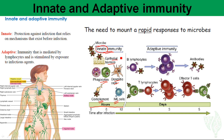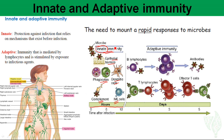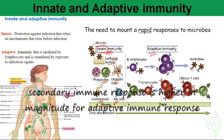The innate immune response is approximately the same magnitude during both the primary immune response — the first time the invader enters — and the secondary immune response — when the invader enters a second time. In contrast, the adaptive immune system comes later, activating after about one day, and reaches peak immune response around day 5 of infection.